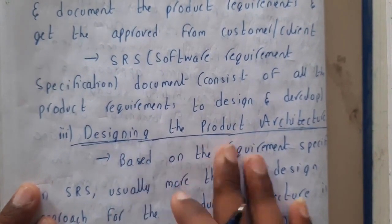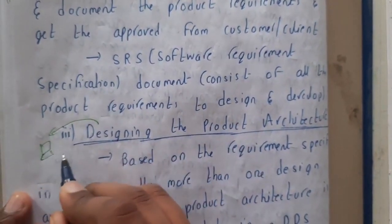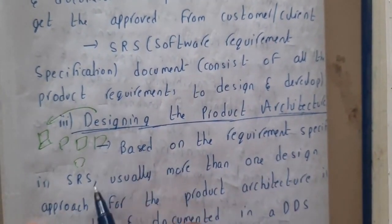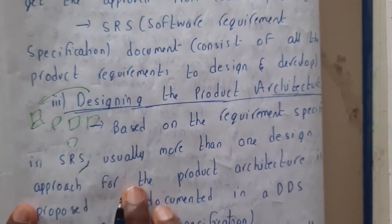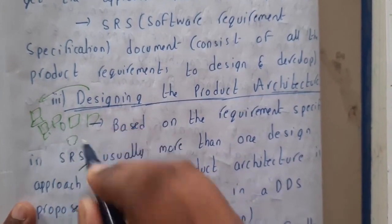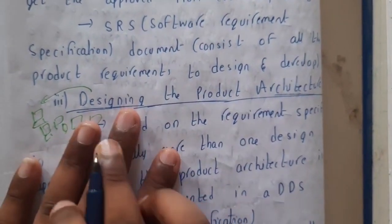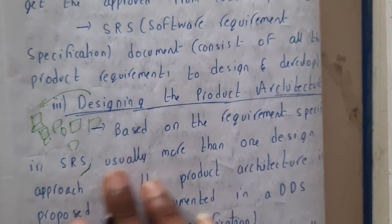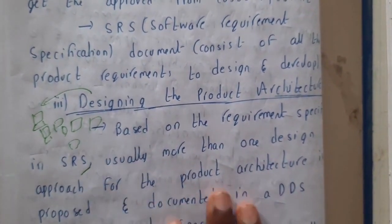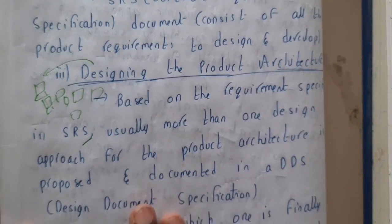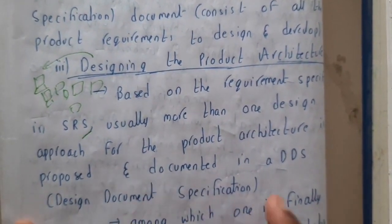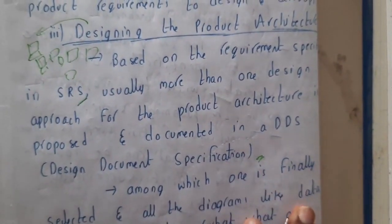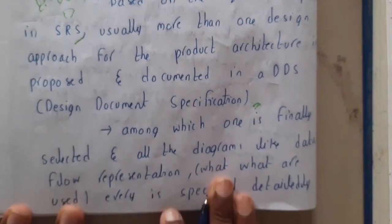In the next step, you will be designing the product — the outline of the product, how the product will be, what the modules will be. Based on the requirements specified in the SRS, usually more than one design approach is made. You will make multiple designs — two or three — and decide on one as the finalist. These documents are called Design Documentation Specifications.